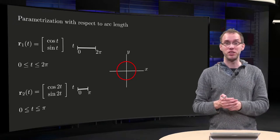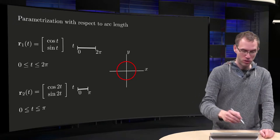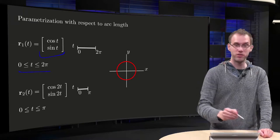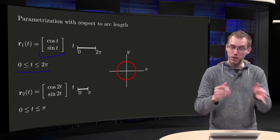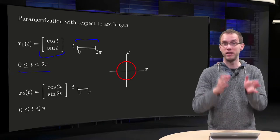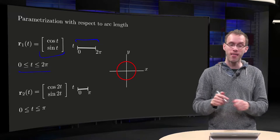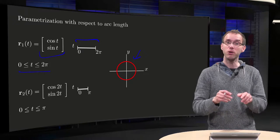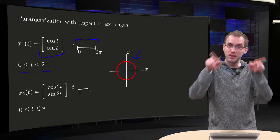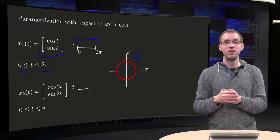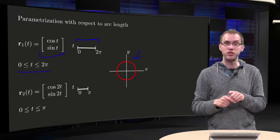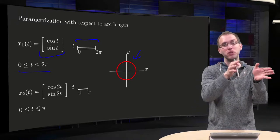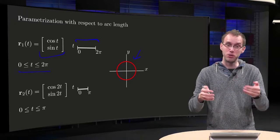Let's do an example of two parameterizations of the same curve. Our first parameterization is cos t, sin t, where t goes between 0 and 2π. So in the parameter domain our length is 2π. It parametrizes the unit circle, and in the xy plane the length of the total curve is just the circumference of a circle with radius 1, so 2π. In this case the length both in the parameter domain and in the xy plane are the same: 2π.